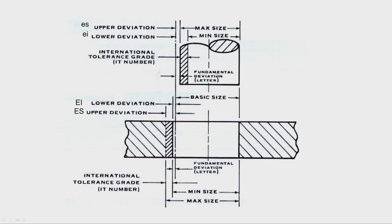Fundamental deviation is the deviation nearest to the basic size. In this case the upper deviation is very close to the basic size, so this gap is the fundamental deviation, represented by lower case letters for shafts like a, b, c, d. For holes, the lower deviation capital EI is very close to the basic size, and this gap is the fundamental deviation, designated by capital letters like A, B, C, D, etc.